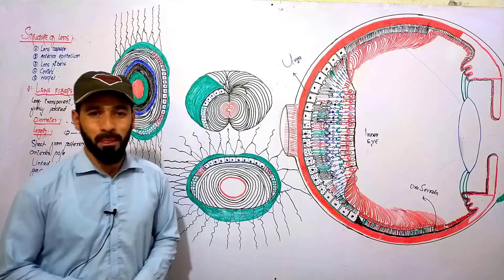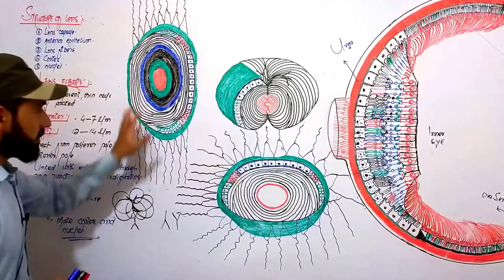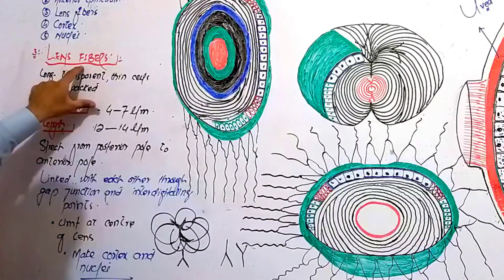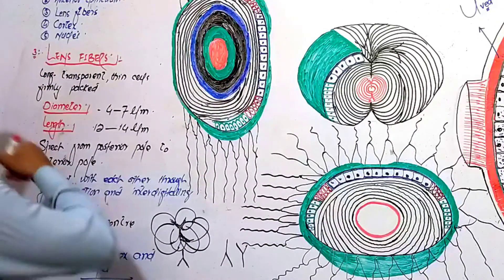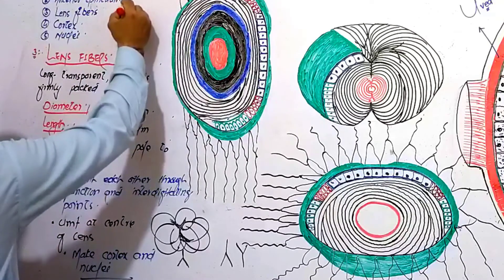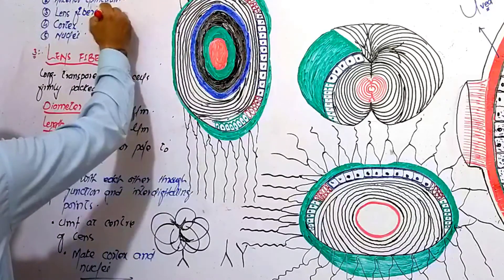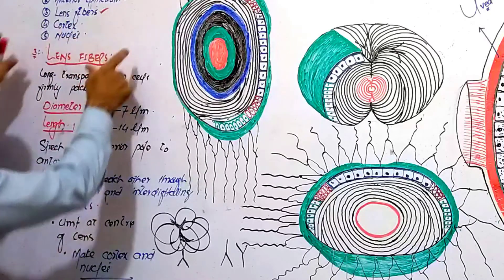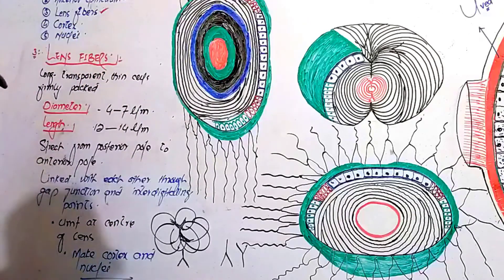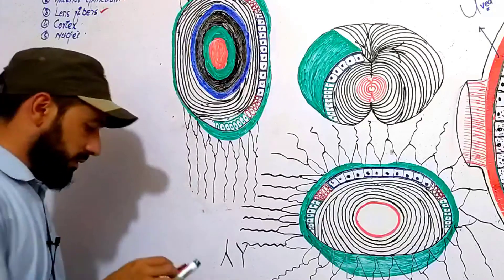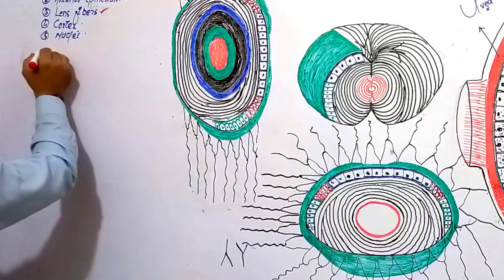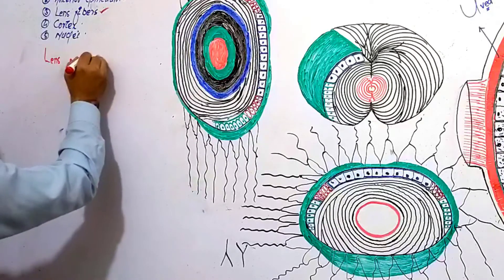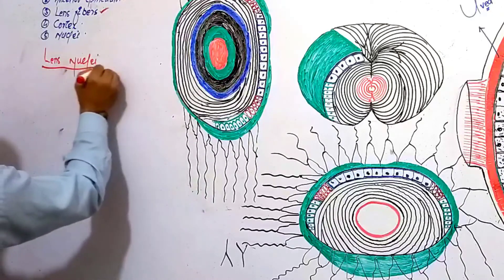Hello dear friends, welcome back. We are discussing the structure of the eye lens. In the previous lecture I discussed lens fibers, lens capsule, anterior epithelium, and lens fibers. Now we are going to discuss the cortex and the nuclei.